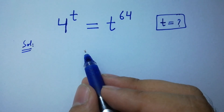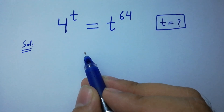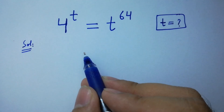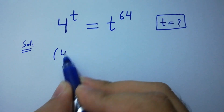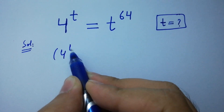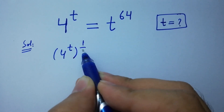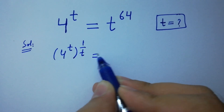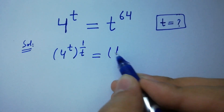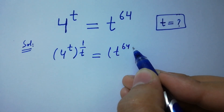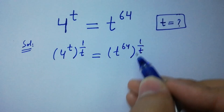To solve this, take power 1 over t on both sides: 4 to the power t, to the whole power 1 over t, equals t to the power 64, to the whole power 1 over t.